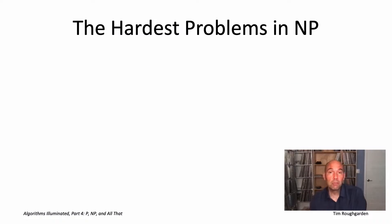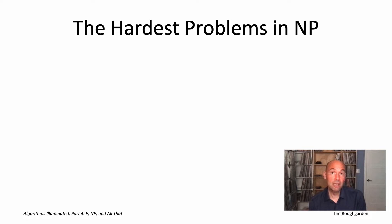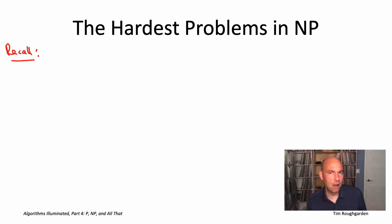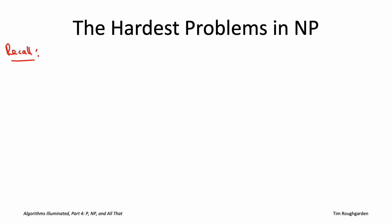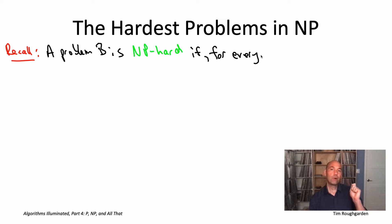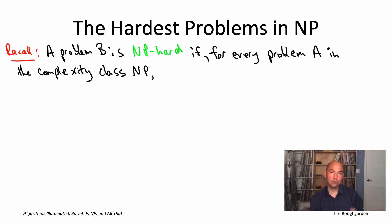We are now ready to formally define NP-complete problems — problems that are the hardest problems within NP, problems that simultaneously encode as special cases all other problems that have efficiently recognizable solutions. NP-completeness is really best thought of as a specific kind of NP-hardness. As a reminder, the formal definition of an NP-hard problem is a problem B for which, for every NP problem — every search problem with efficiently recognizable solutions — there's a reduction from A to B.